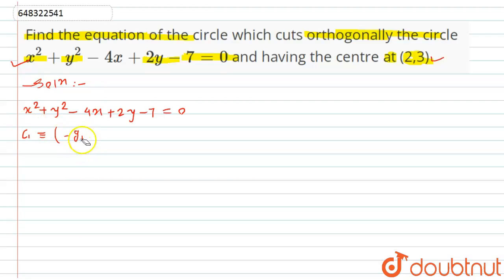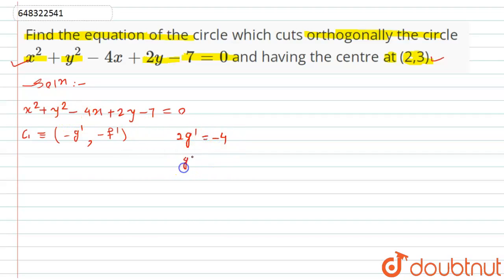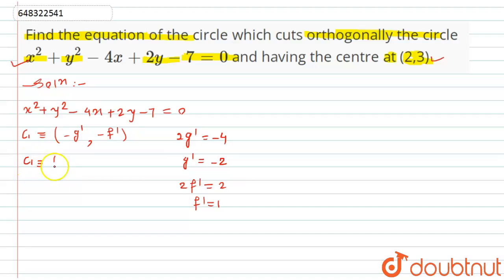On comparing with the general form, we get 2g' = -4, so g' = -2, and 2f' = 2, so f' = 1. Therefore the center c1 of the given circle is (-g', -f') = (2, -1).